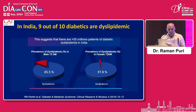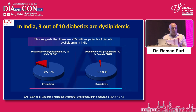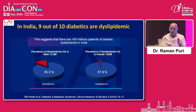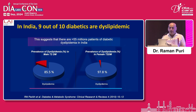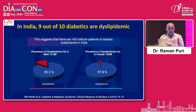Nine out of ten patients of diabetes suffer from dyslipidemia. It is a special dyslipidemia because the triglyceride is high, HDL is low, and LDL cholesterol is either normal or mildly raised. So everybody feels very happy that their LDL cholesterol is good — nothing to worry about. But they don't know that there is increased prevalence of small dense LDL particle, which is more atherogenic and which is a problem creator.